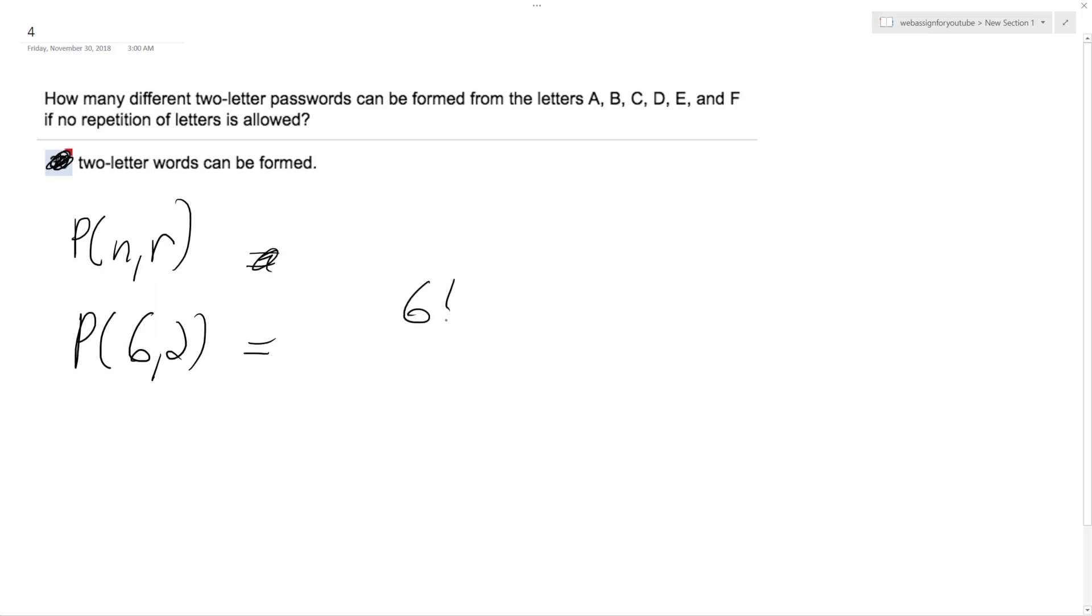So what we have here is 6 factorial over 6 minus 4 - 6 minus 2 factorial. So we end up with 6 factorial over 4 factorial.